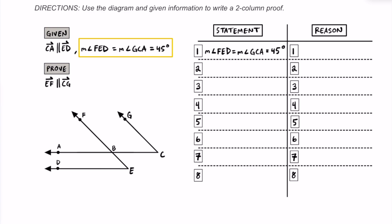We know the measure of angle FED and the measure of angle CGA are both 45 degrees, and this information is given. So this is angle FED, and we're going to label that as 45 degrees. And this is angle GCA, which is also 45 degrees.